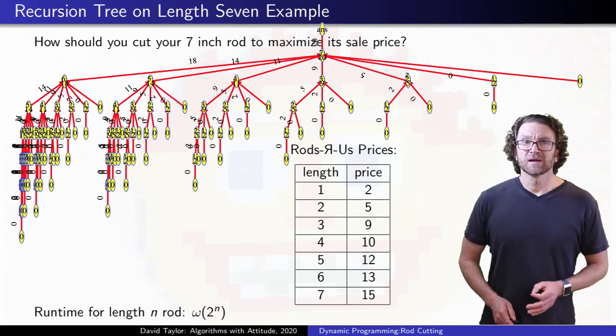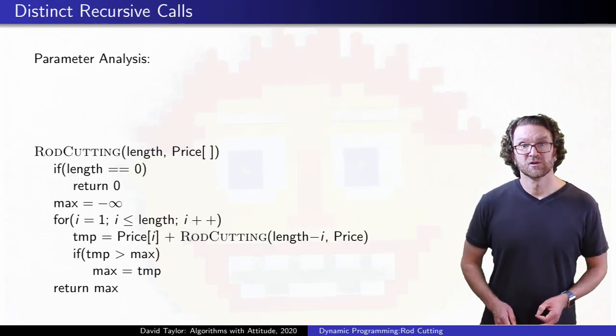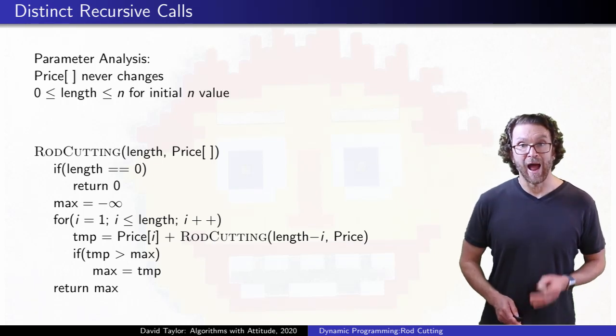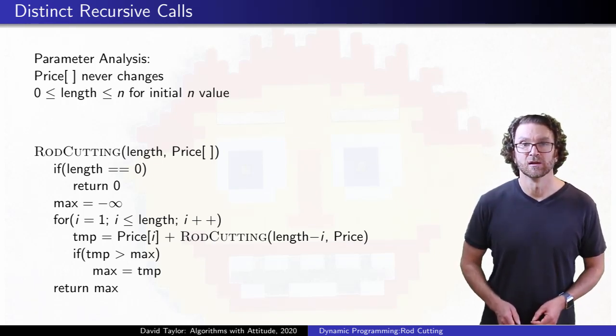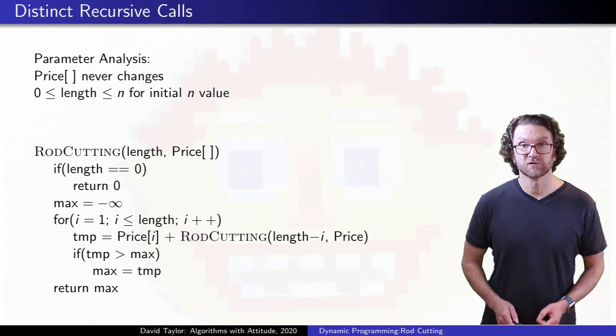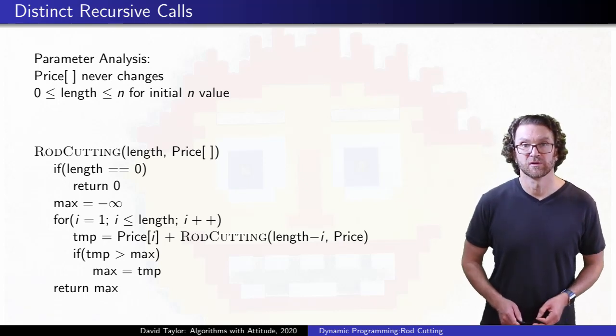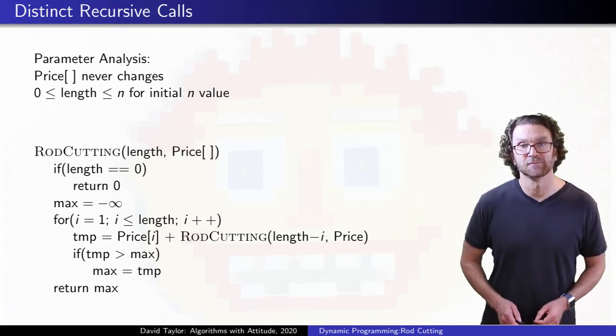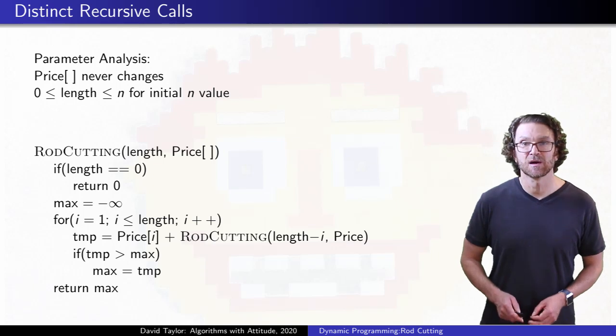But when we think about what the recursive calls look like, there is only one changing parameter, how much do you have left to sell, and that number is always an integer from 0 up to whatever you started with, so it can't have that many values, just a linear number of them.